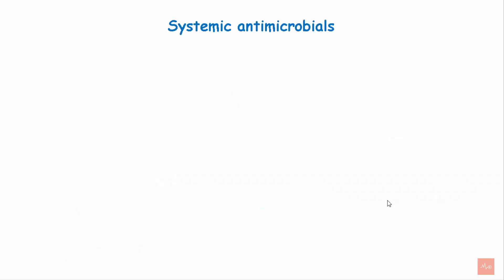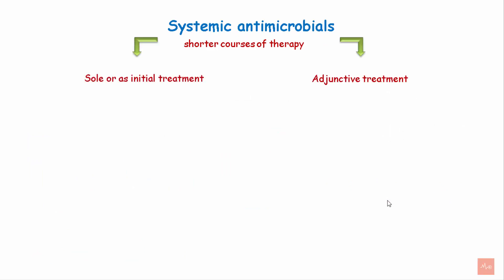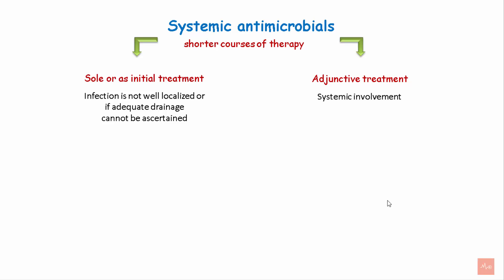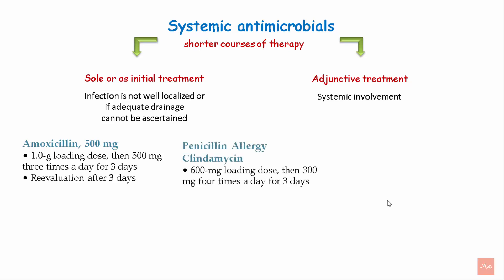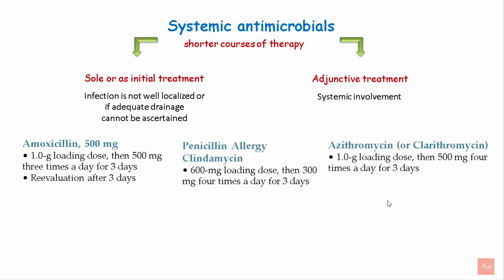Systemic antimicrobials are given as short courses of therapy. They can be used as a sole treatment or as adjunctive therapy. As a sole therapy, they are given when infection is not localized or adequate drainage cannot be ascertained. As adjunctive treatment, they are used when systemic involvement is evident. Amoxicillin is the most effective antimicrobial against periodontal abscess, given as a 1g loading dose followed by 500 mg three times a day for 3 days. The patient is re-evaluated after 3 days. In case of allergy to penicillin drugs, clindamycin or azithromycin can be given for 3 days.